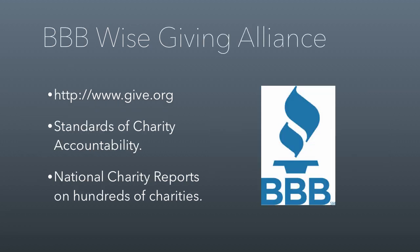The Better Business Bureau at Give.org publishes national charity reports with standards of charity accountability — evaluating not so much performance or financials, but how well nonprofits disclose information to the public. These are all places you can turn to learn more about nonprofits. And if you want raw 990s, you can go to GuideStar.org, where you can download 990s for just about any nonprofit in the country.